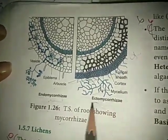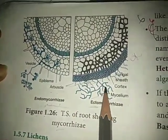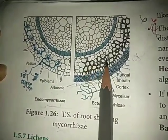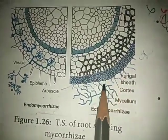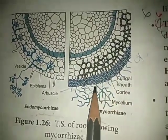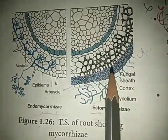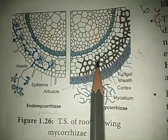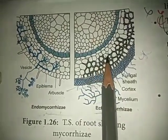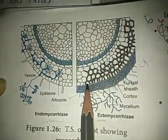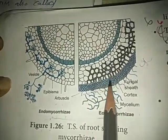Ectomycorrhizae — 'ecto' meaning outside — involves the fungal mycelium forming a dense sheath around the root called the mantle. The hyphal network penetrates the intercellular spaces of the epidermis and cortex to form the Hartig net. This is called ectomycorrhizae.